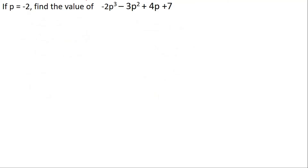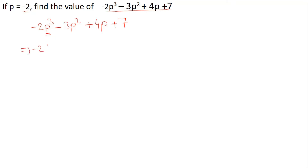Next question: if p equals minus 2, we have to find the value of the expression minus 2p cubed minus 3p squared plus 4p plus 7. In place of p we will write the value minus 2, so we write minus 2 into minus 2 cubed, minus 3 into minus 2 squared, plus 4 into minus 2, plus 7.